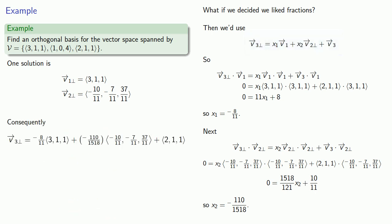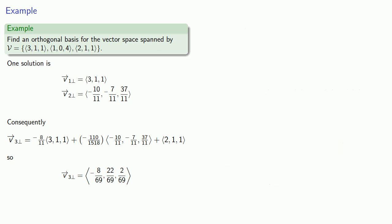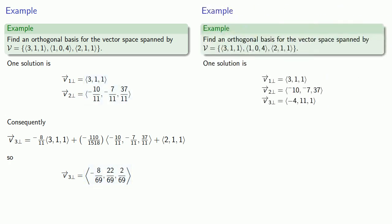And after all the dust settles, we get v̄₃⊥ = (-8/69, 22/69, 2/69). And so here is a different orthogonal basis for the same vector space using fractions. And it doesn't matter which method you choose to work. Either this set of vectors or this set of vectors will work as an orthogonal basis for a vector space. The only difference is how much work you have to put in to getting them.